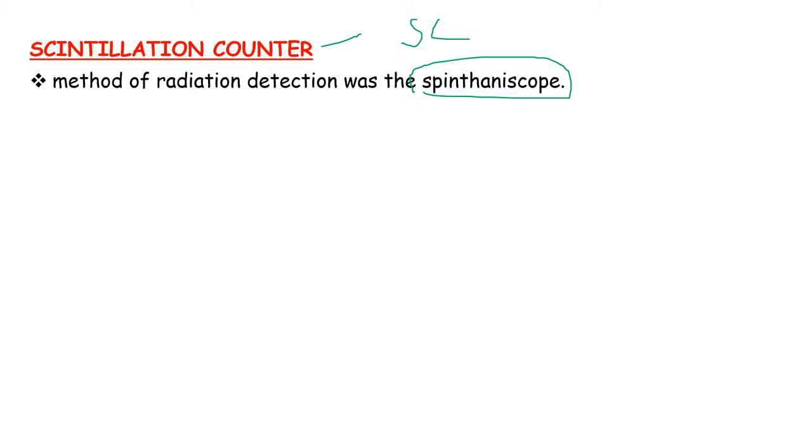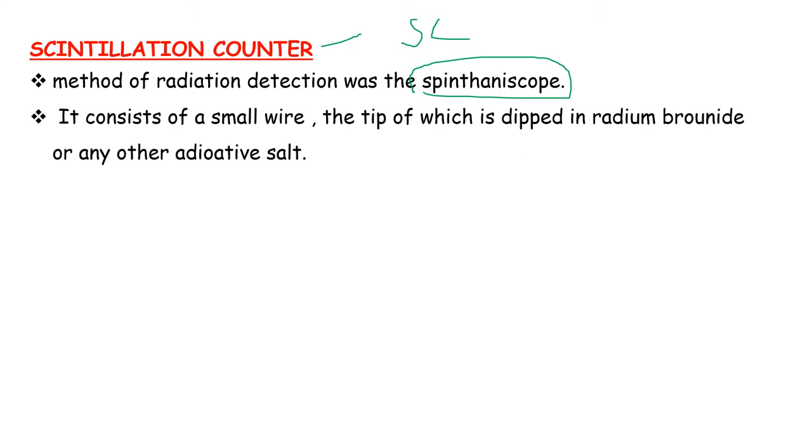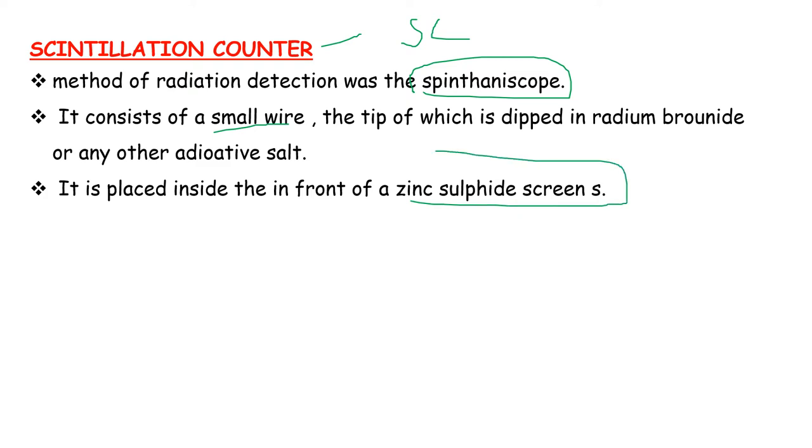It consists of a small wire, the tip of which is dipped in radium bromide or any other radioactive salt. It is placed inside in front of a zinc sulfide screen.